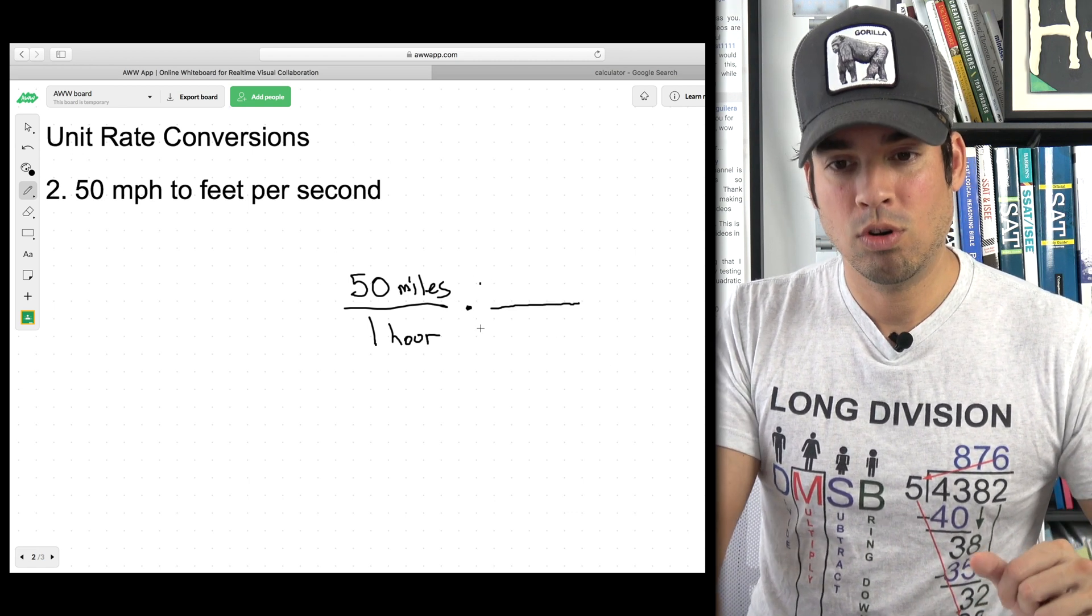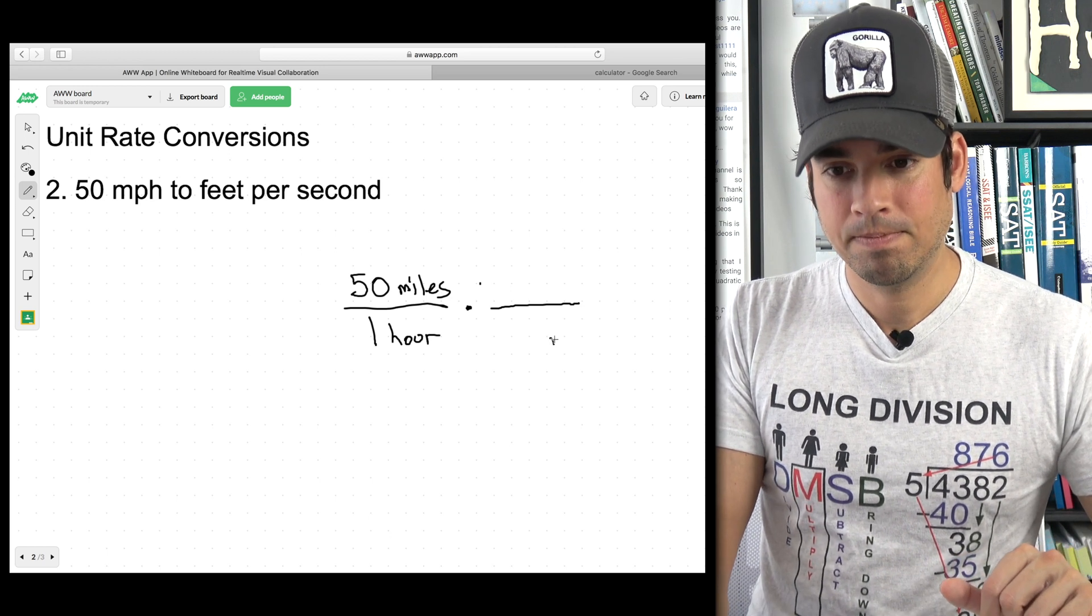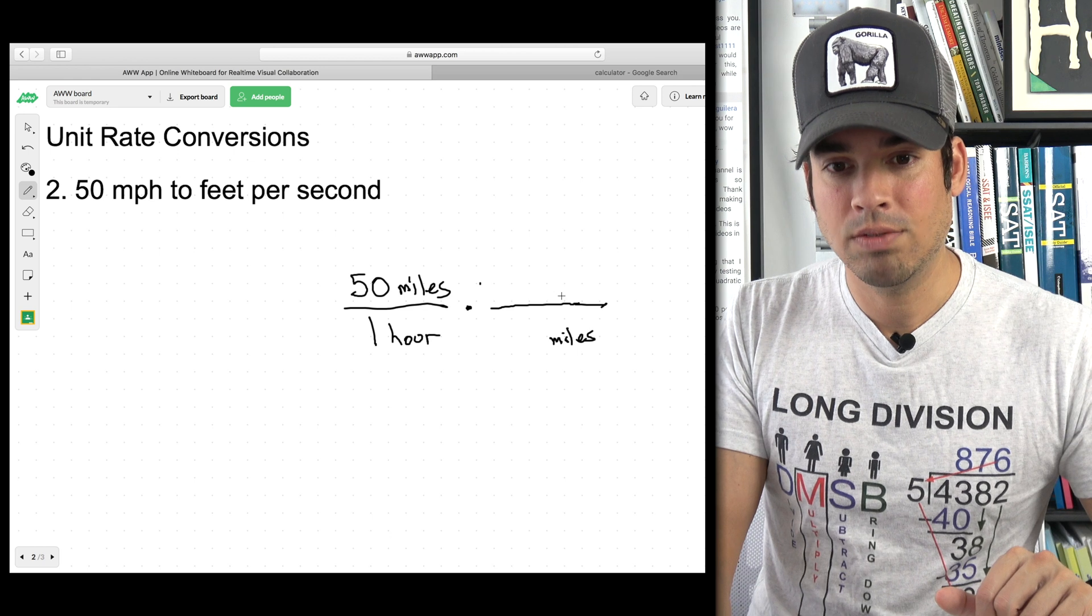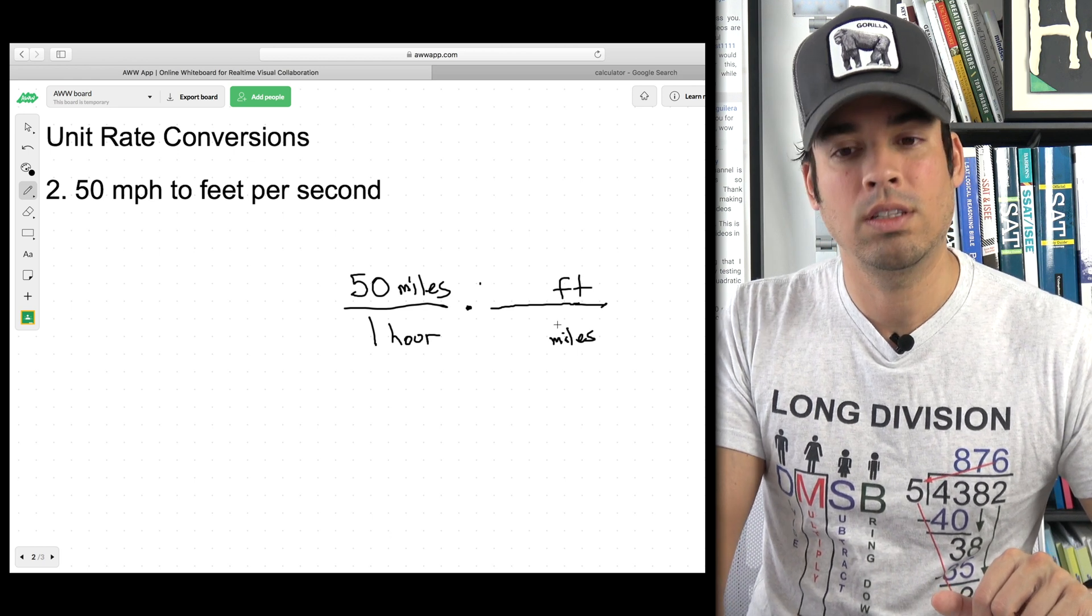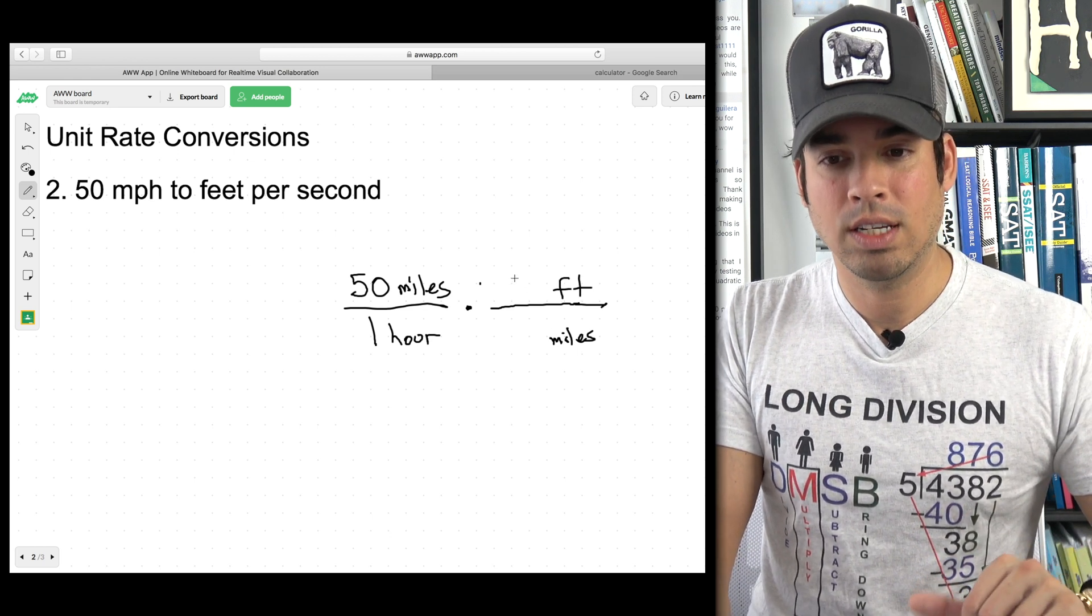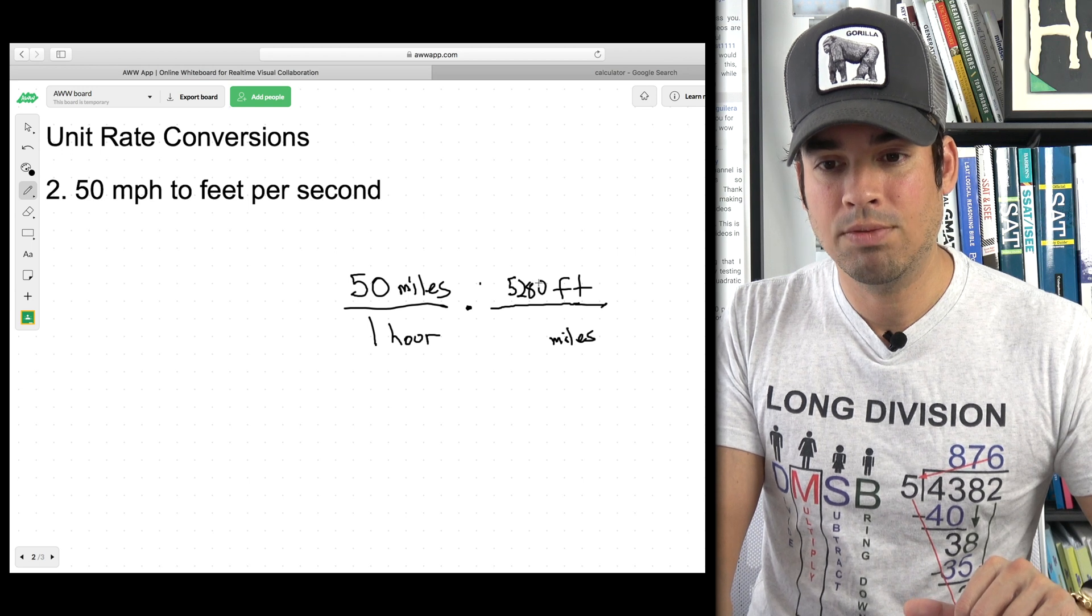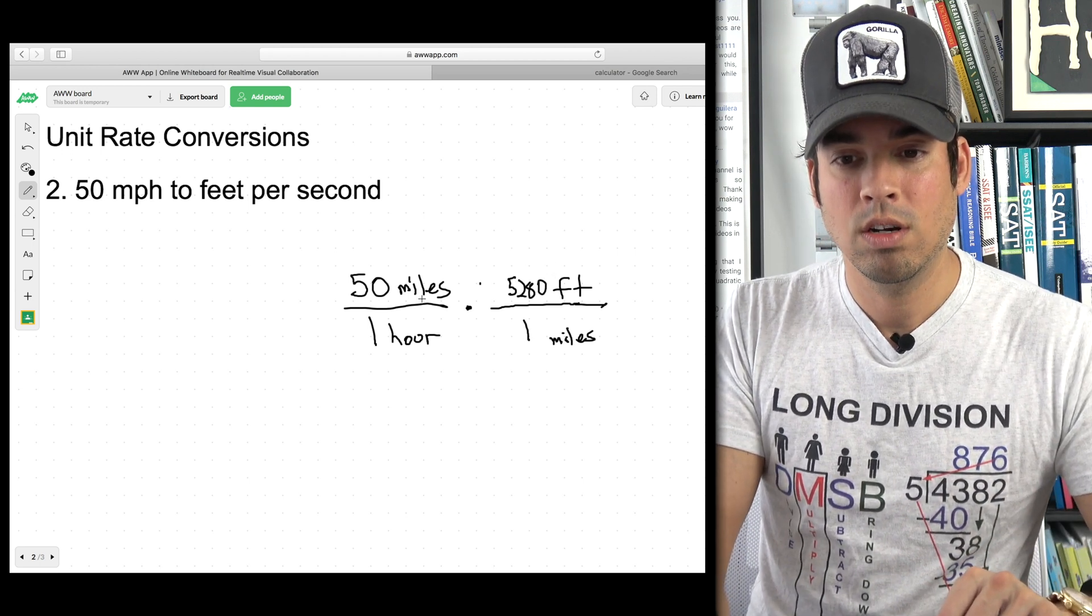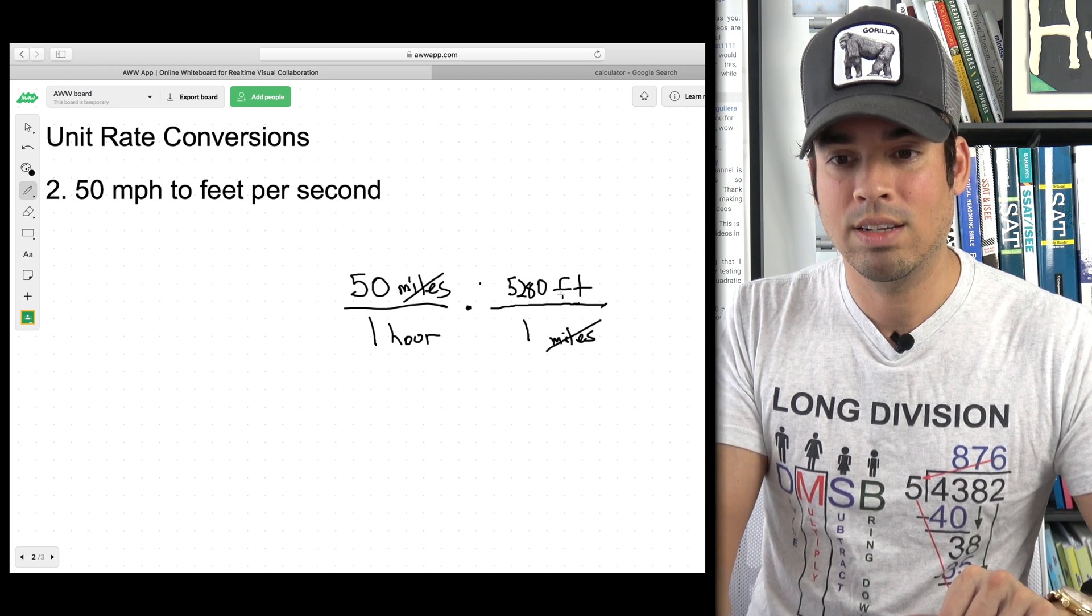Again we follow the same protocol. If I have miles on top I need miles on the bottom and I'm converting to feet. So feet goes on the top. Now I need equivalent values. I need 5,280 feet equals one mile. So we satisfy the fact that this is simply one. Cross cancel, cross cancel. Now we're into feet.